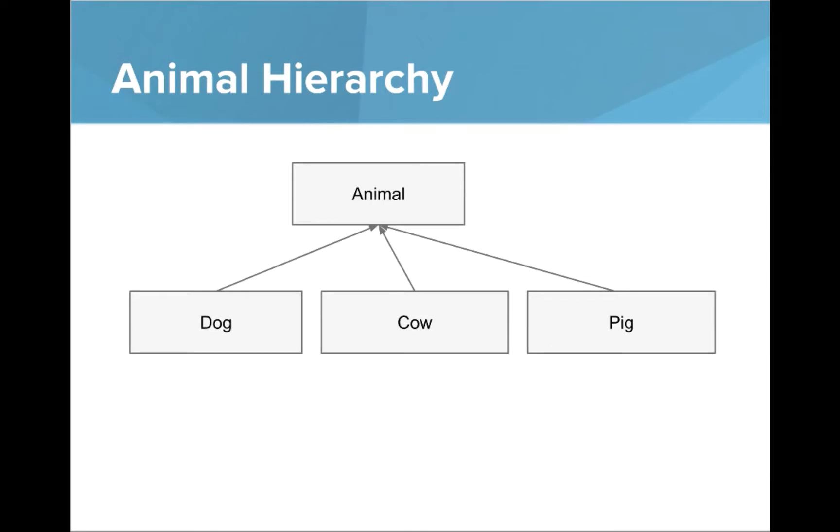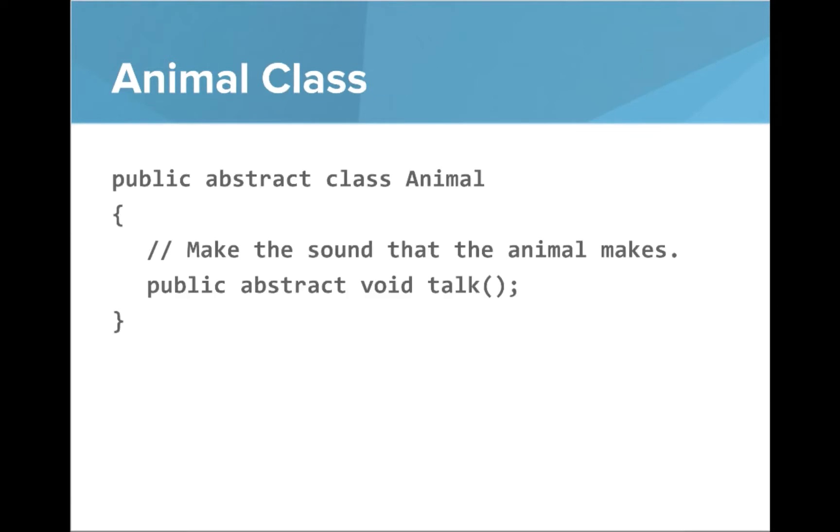Now let's look at animal hierarchy. You can see we have an animal class up at the top and then dog, cow, and pig extend from animal. And here's a little snippet of our animal class. It's an abstract class and it has an abstract method, public abstract void talk. And talk will make the sound that the animal makes.